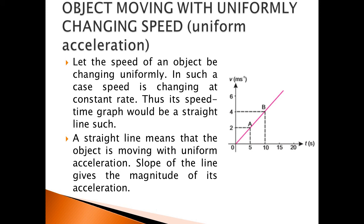Object moving with uniformly changing speed or uniform acceleration. When the speed of an object changes uniformly, speed is changing at a constant rate, so its speed-time graph would be a straight line. A straight line means that the object is moving with uniform acceleration. The slope of the line gives the magnitude of acceleration. In this graph, horizontal axis shows time in seconds, vertical axis shows velocity in meters per second, and the pink line represents the uniform acceleration of the object.